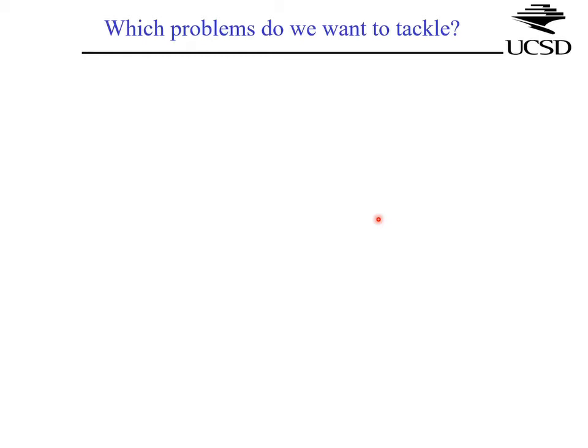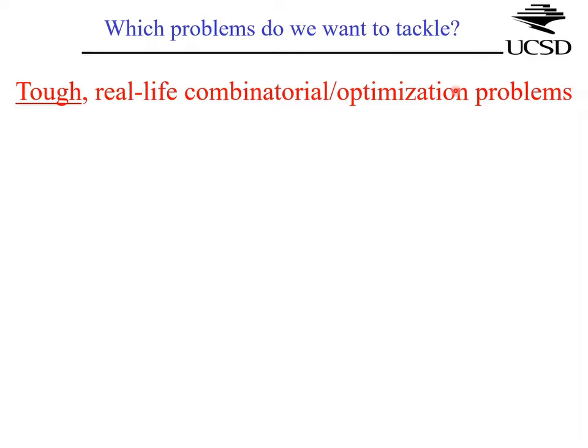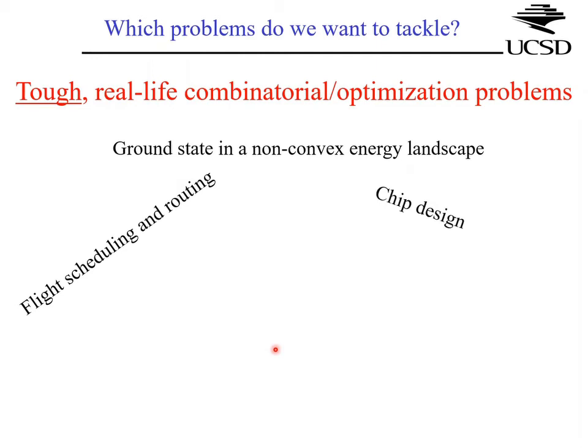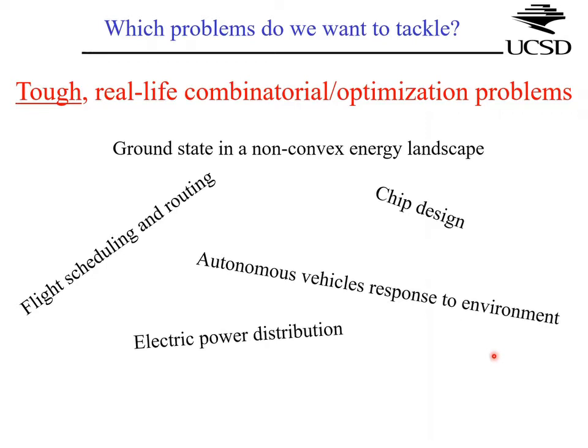I will discuss only the digital version of this paradigm to solve tough real-life combinatorial optimization problems, which appear in essentially any aspect of science and technology — for example, finding the ground state in a non-convex energy landscape, flight scheduling and routing, chip or software design, electric power distribution, autonomous vehicles, responsive environments, and many more.